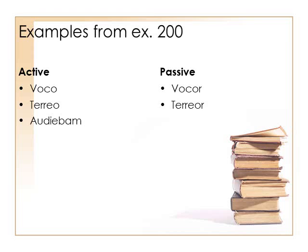AUDIEBAM — now we've changed our tense. We're still first singular, I, but now we've changed to imperfect tense. I was hearing. And here, for the imperfect tense, instead of supplementing, we're going to replace. AUDIEBAR. I was hearing becomes I was being heard. And again, in English, we're going to add a form of the verb 'be' or 'being' to indicate this passive voice.